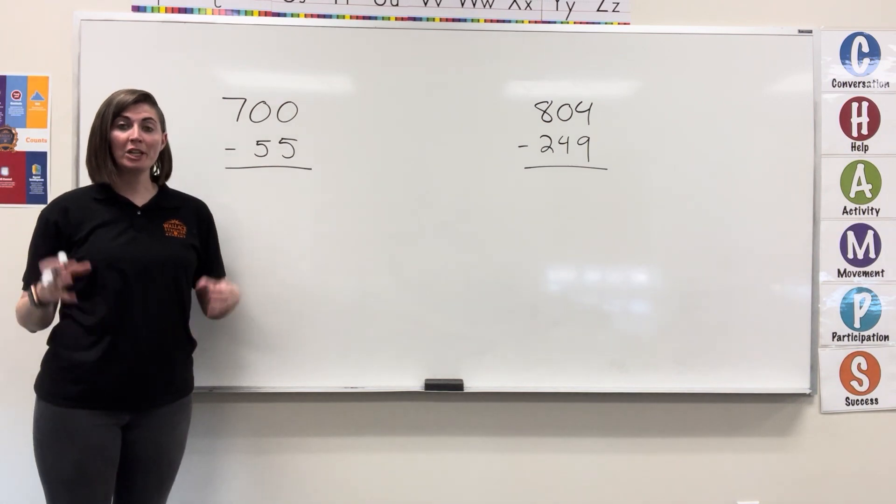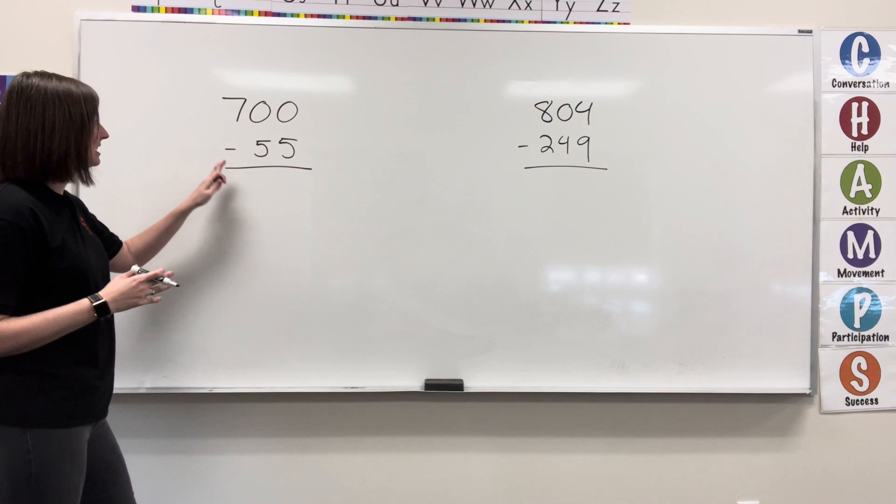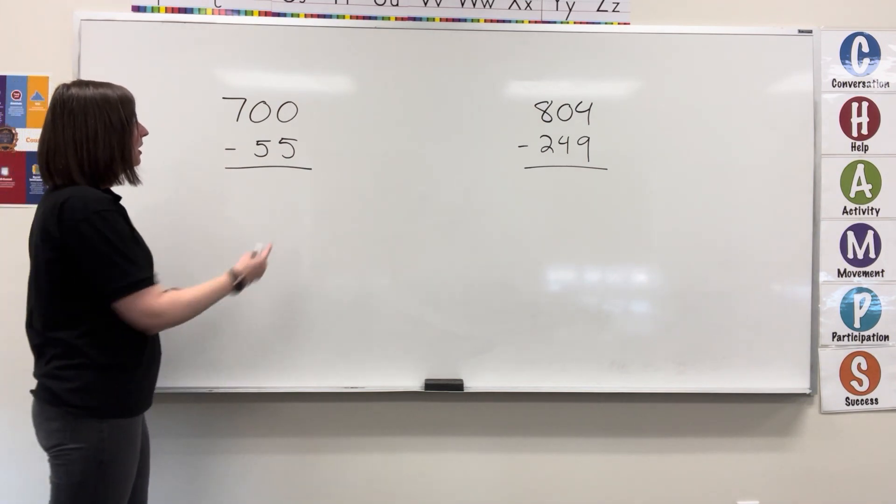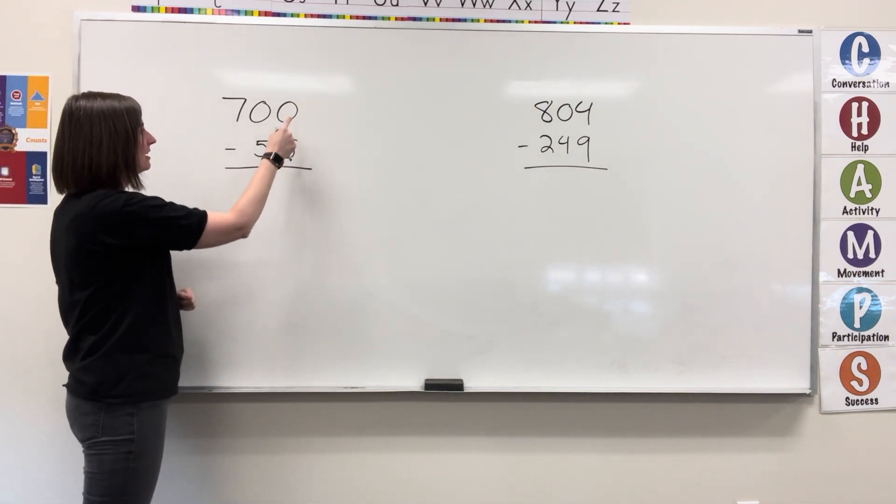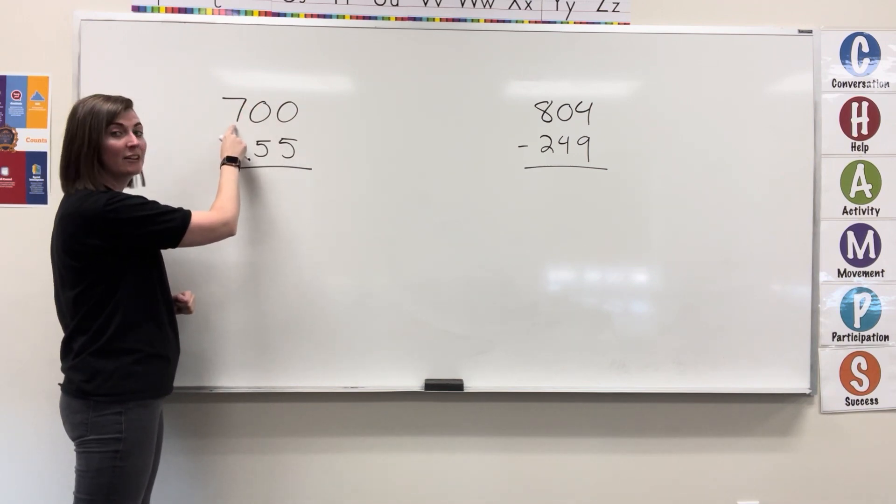When we're subtracting across zeros, we can group some of our values. Here we have 700 minus 55. I cannot take 5 from nothing. There's nothing to borrow from here, but I can take from this 7.